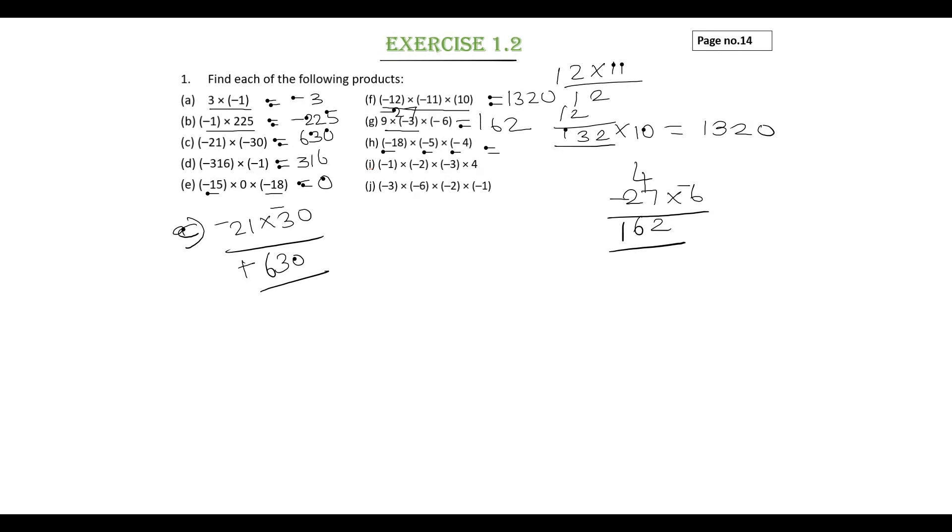H subdivision, minus 18 into minus 5. 18 into 5 is 90, 90 into 4 is 360. So you have 3 negative signs. Minus into minus will be plus, plus into minus is minus. So the result is negative.